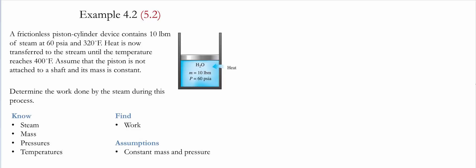Heat is now transferred to the steam until the temperature reaches 400 Fahrenheit. Assume that the piston is not attached to the shaft and the mass is constant. We need to determine the work done by the system during this process.